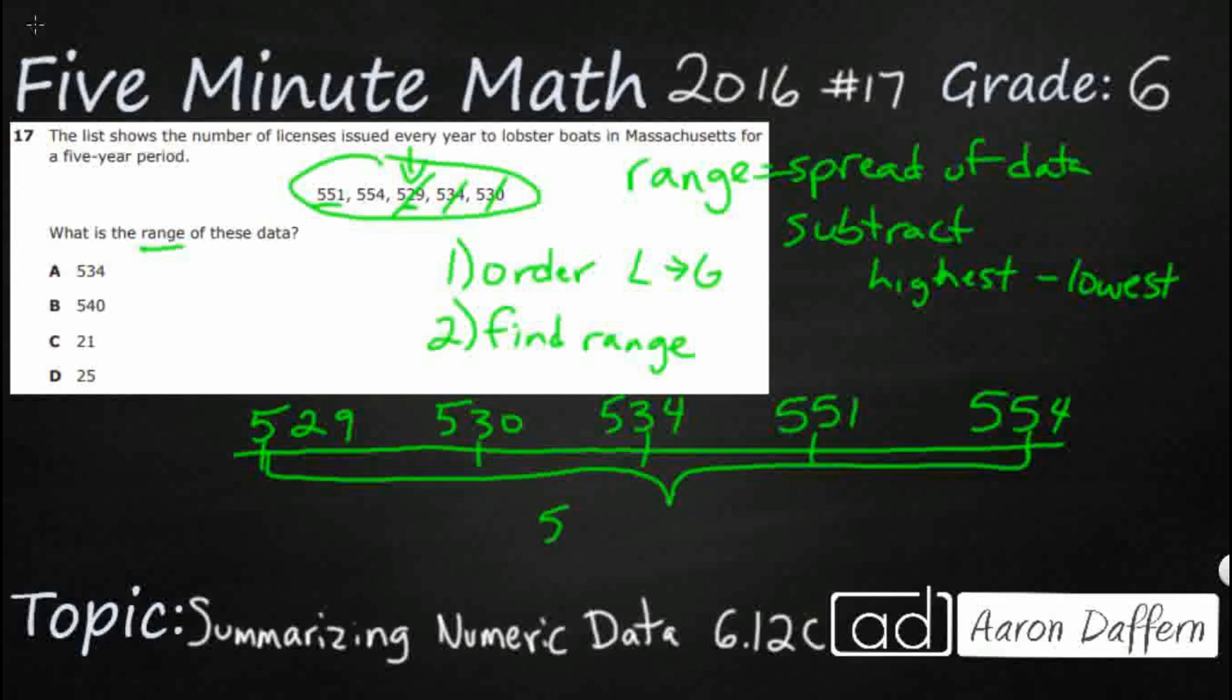And so 551, actually 554, minus 529, well that's going to get you a range of 25. And you see that is our option here. So D here is going to be our answer of 25.